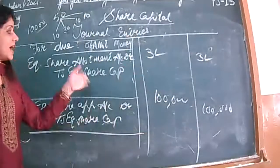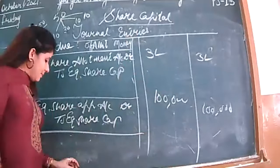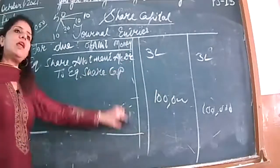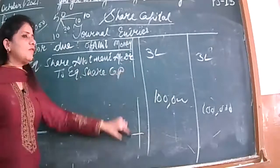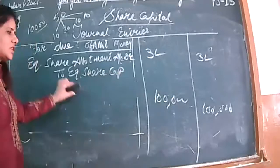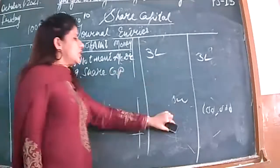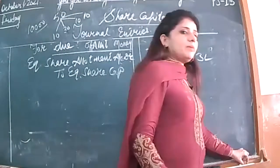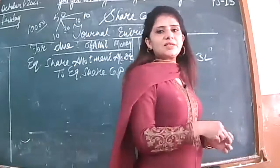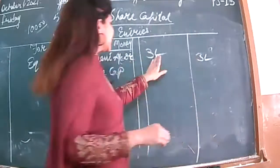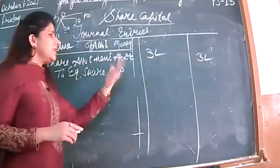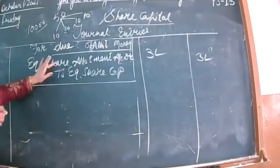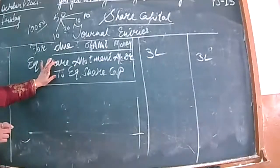I am assuming in my imaginary example that all shareholders are paying the full amount. Defaults and calls in arrears are also possible, but because I am telling you the entries for the first time, I am assuming that all shareholders have paid all the amount. When the money comes to me, I will go to my bank account. The entry: bank account debited to equity share allotment account.